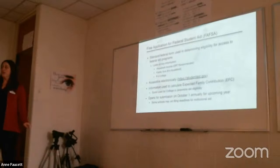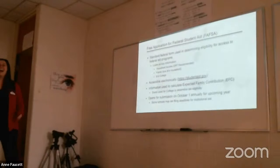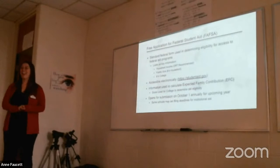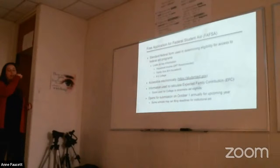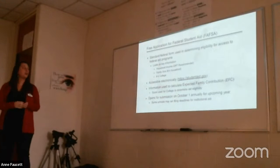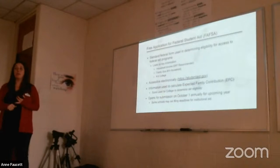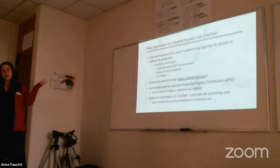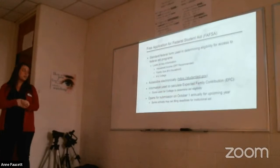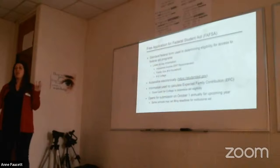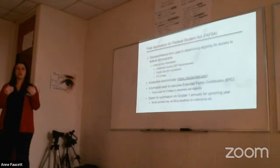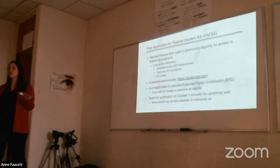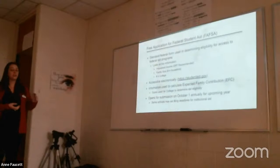To access financial aid, there is an electronic form called the FAFSA. This online form looks at things like your household income, how many people are in your home, and how many of those people go to college. The purpose of the FAFSA is to calculate the family's Expected Family Contribution, and that number is given to colleges to help build your student's financial aid package.